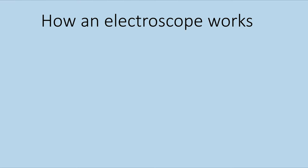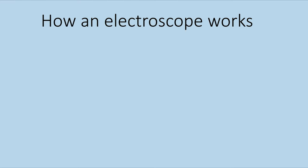How an electroscope works: we have the knob, the rod, and the leaflets — they are all conductors and connected together. If I bring a charged object and put it in contact with the knob, let's assume we place a negatively charged object in direct contact with the knob.